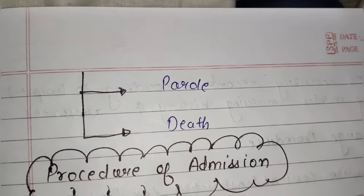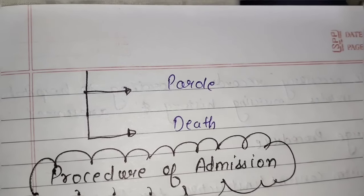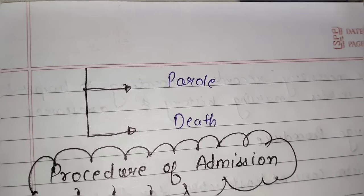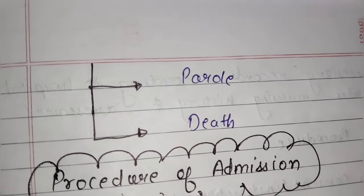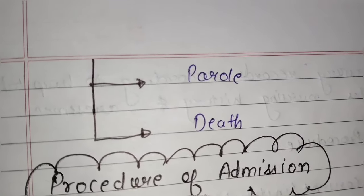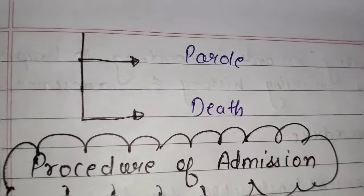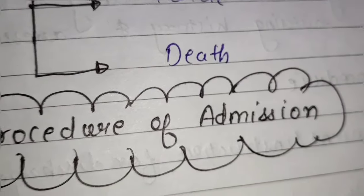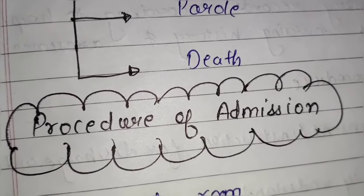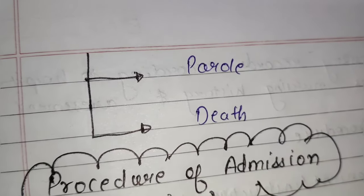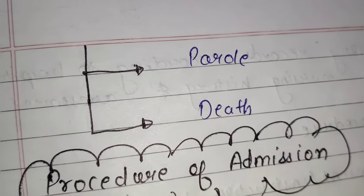Next one is parole. Parole mein jo patient hota hai, usko abhi discharge nahi mila hota, but on the request of patient and relatives, do ya teen din ke liye patient ko ghar bhej diya jata hai. Agar return nahi aata hospital ke andar, to uska discharge procedure start kar diya jata hai according to hospital policy.